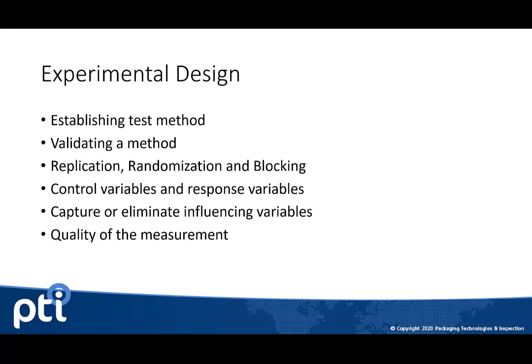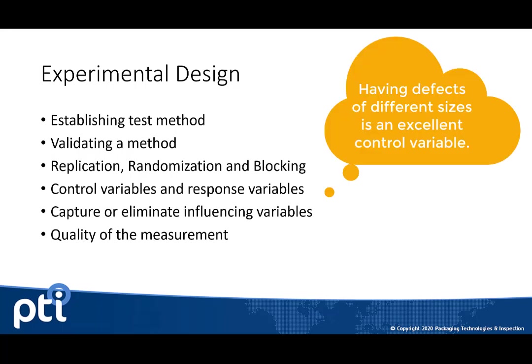Experimental design very much depends on what you're looking to do — whether you're validating the system or establishing a test method. If we're establishing a test method, how we lay out the sample sets and what we want included in that testing is going to be very different. When we're establishing a test method, we typically want at least 50 or 100 samples, of which we have a population of defects included, and you know where the good samples are and the defects.